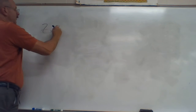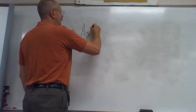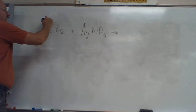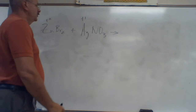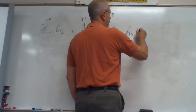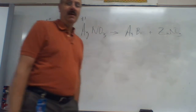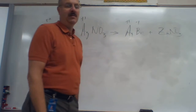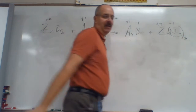ZnBr₂ plus AgNO₃. Take the two positives and get them to trade places. Zn would be plus two, Ag would be plus one — and notice in the directions it did say all the Ags are plus one. So those two are going to trade places: Ag joins up with Br, plus Zn joins up with NO₃ from the polyatomic ion page. Plus one, minus one — those cancel each other. Zn is plus two, NO₃ is minus one, so we gotta crisscross that and make that into a two.